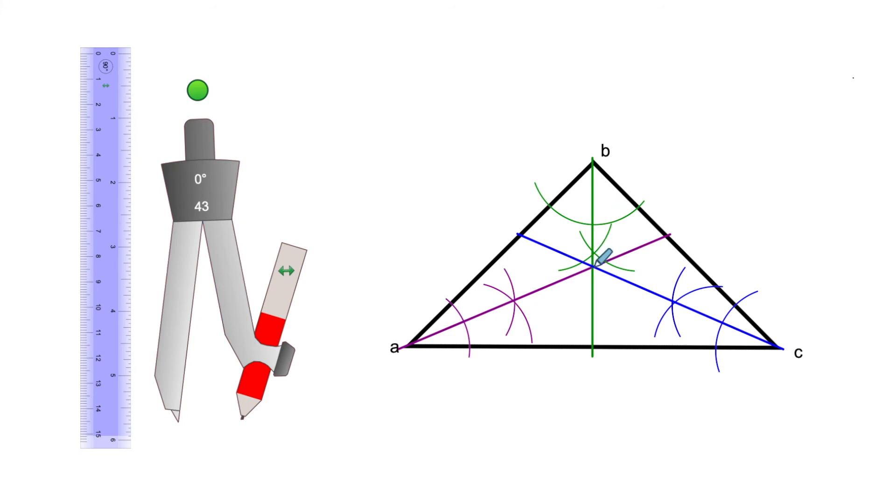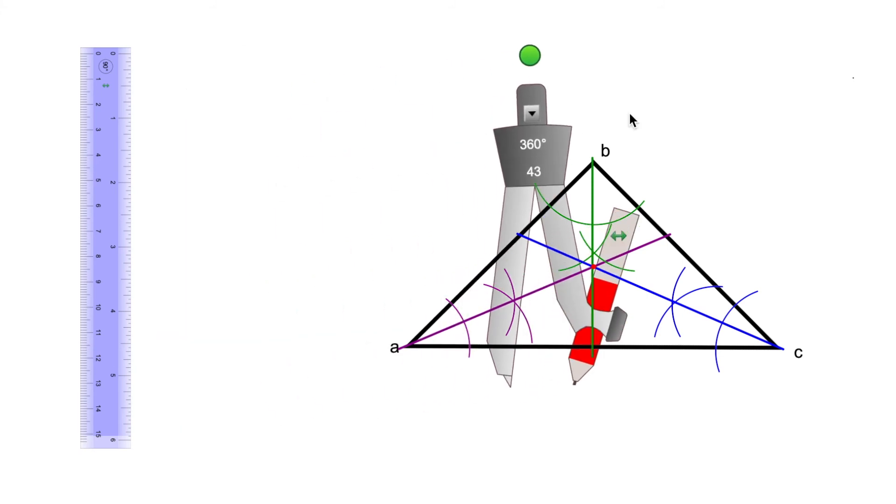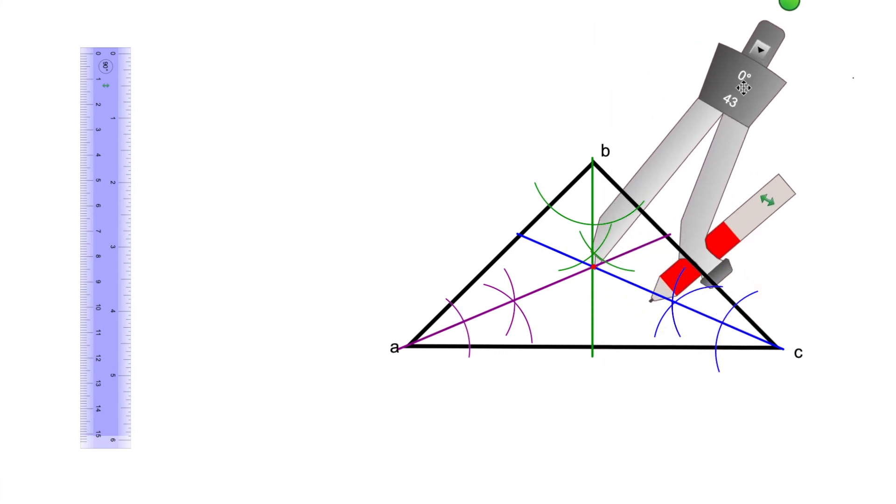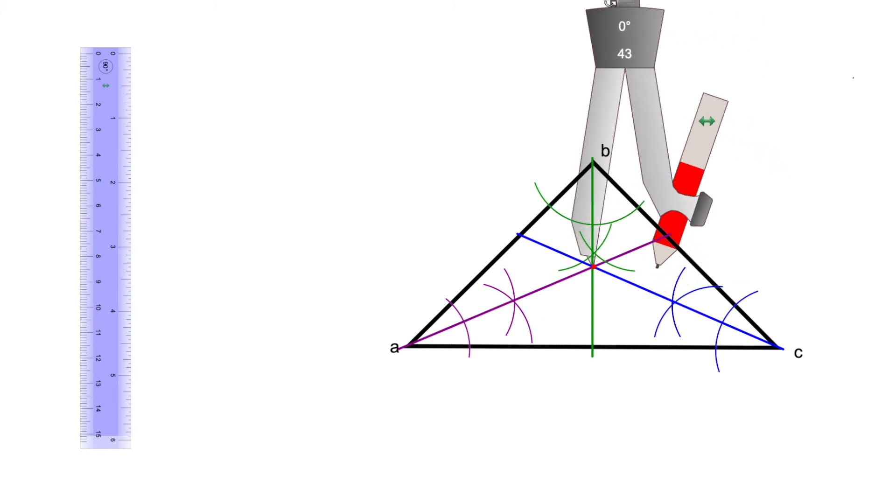That dot in red, what are we going to do with this incenter? We'll grab our compass, put the needle right in the middle, and open the pencil till one of the tangents, the sides of the triangle.